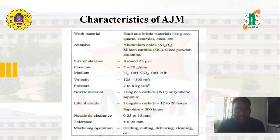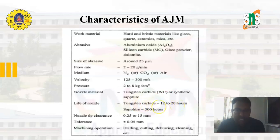The size of abrasive particles ranges from 10 to 25 microns, or up to 50 microns in some cases. Flow rate ranges from 2 to 20 grams per minute. The medium used can be nitrogen, carbon dioxide, or air. Velocity is 125 to 300 meters per second, and pressure is in the range of 2 to 8 kg/cm². The nozzle material is tungsten carbide or synthetic sapphire; tungsten carbide has a nozzle life of 12 to 20 hours, while synthetic sapphire lasts 300 hours. The nozzle tip clearance is 0.25 to 15 mm with a tolerance of ±0.05 mm. Operations such as drilling, cutting, deburring, cleaning, and many others can be performed using abrasive jet machining.